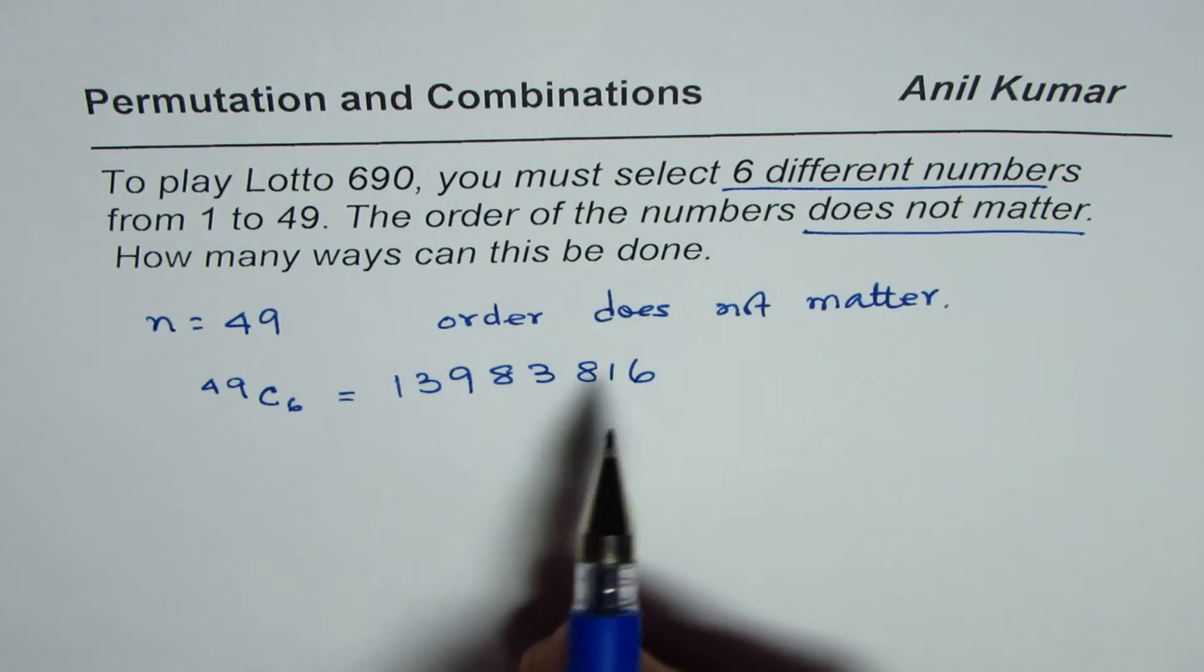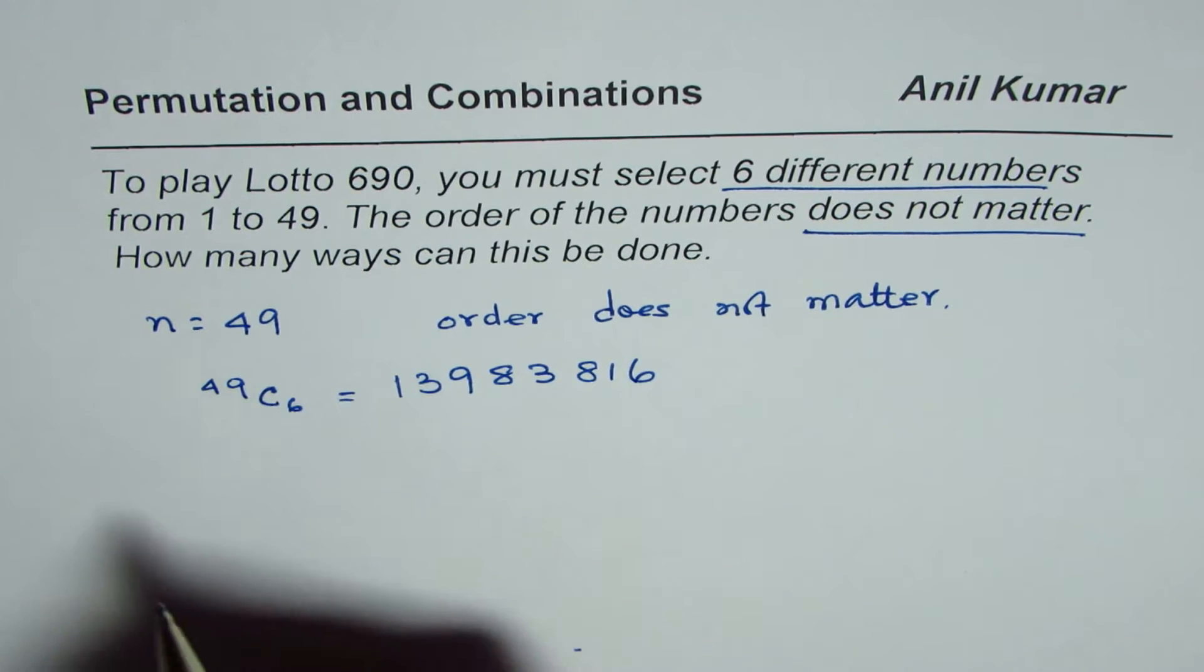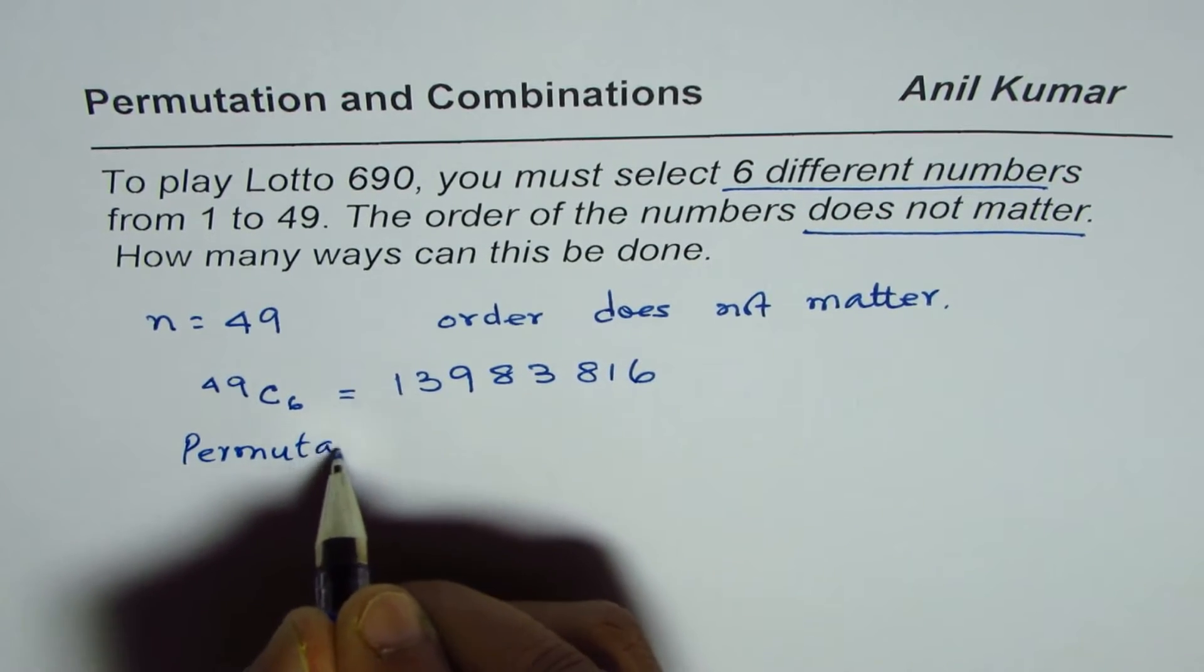Now, let us try to solve the same question using permutation. So that is the alternate method. Let us see how permutation can be adopted to solve this particular question.